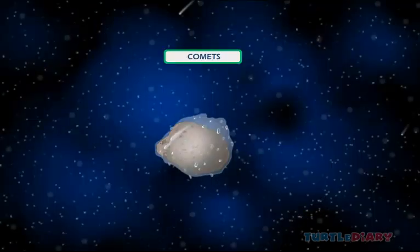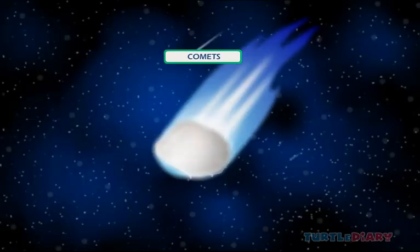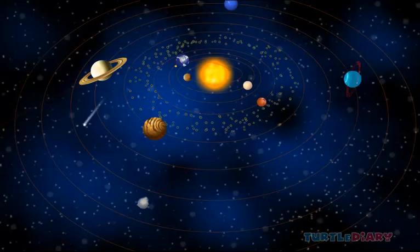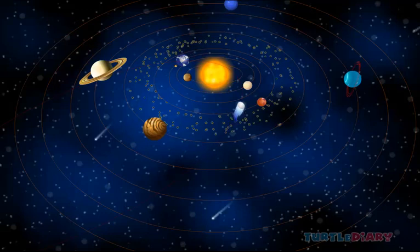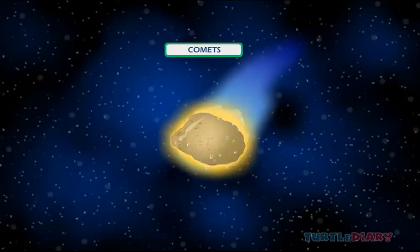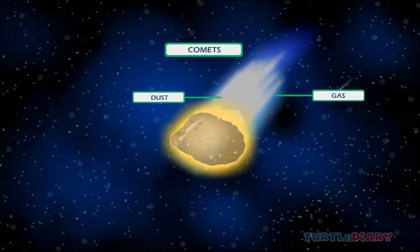Comets are balls of rock and ice that grow tails as they approach the sun. Comets come from far away, an imaginary place at the edge of the solar system. As it moves closer to the sun, the glowing tails are visible. As comets heat up, gas and dust are expelled and trail behind them.